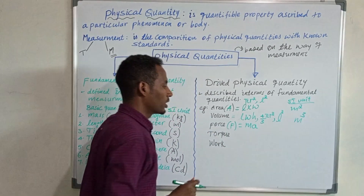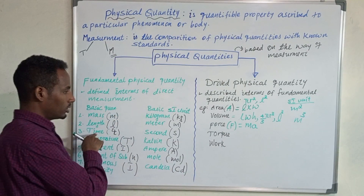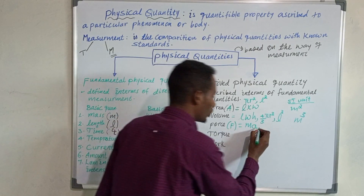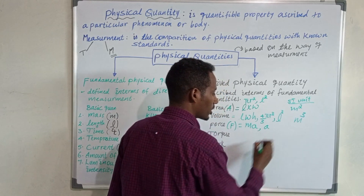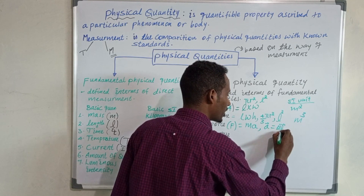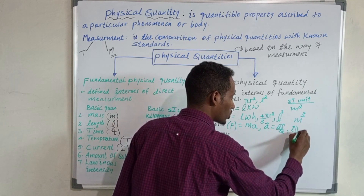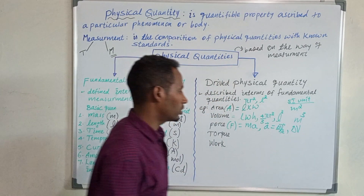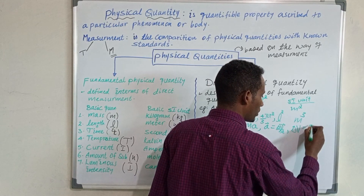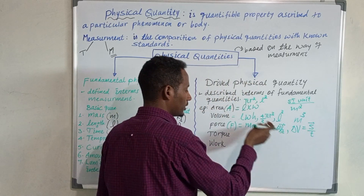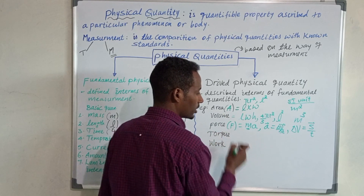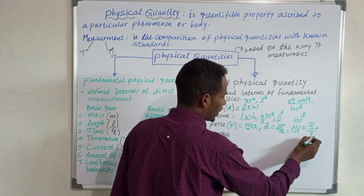Force is expressed as mass times acceleration. Mass is one of the fundamental quantities, but acceleration is not — it is also a derived quantity. Acceleration can be expressed as change in velocity divided by change in time. Velocity is expressed as displacement divided by time. So force, in terms of fundamental quantities, involves mass, displacement, and time.